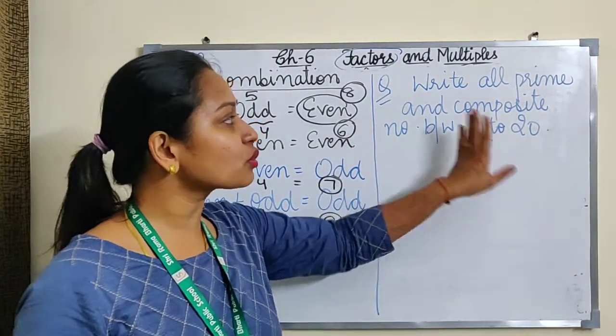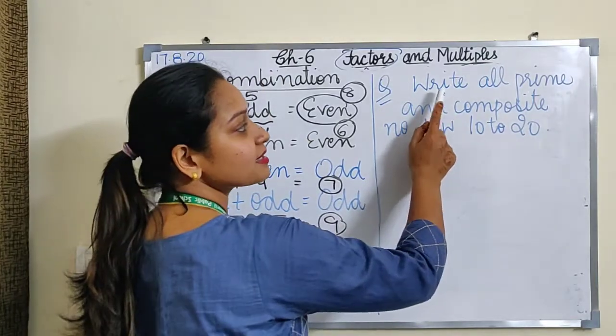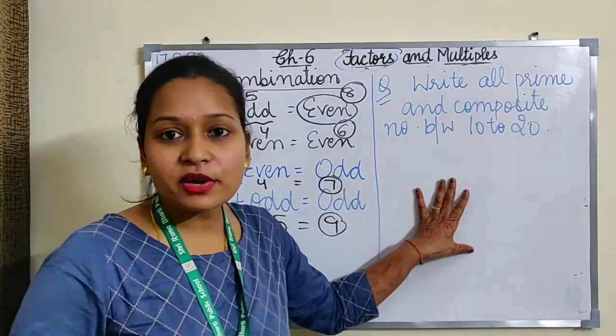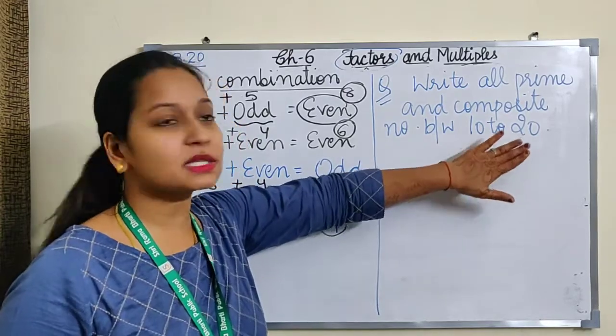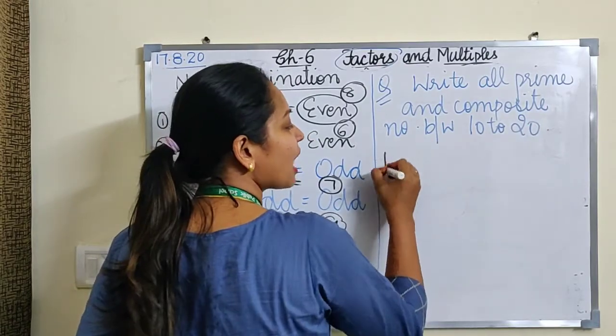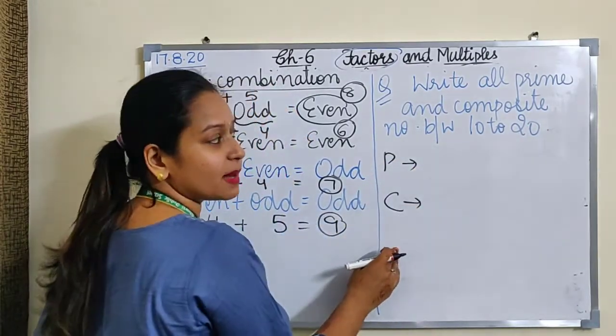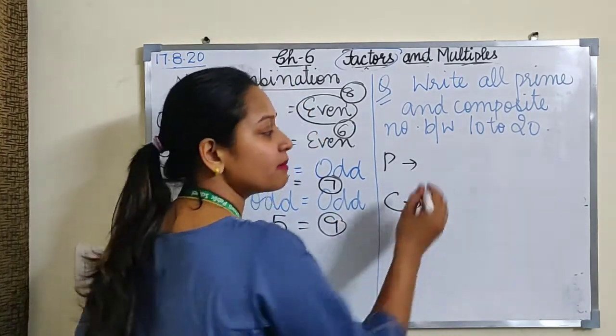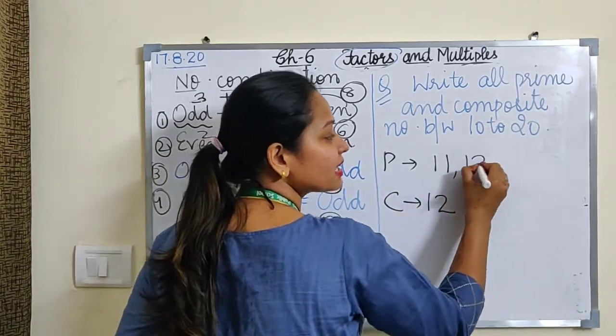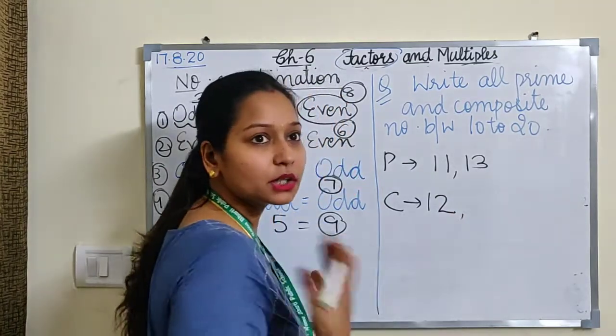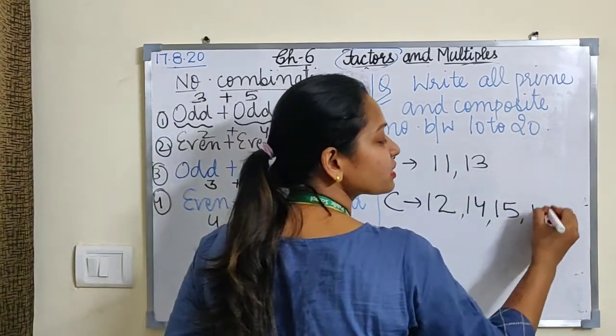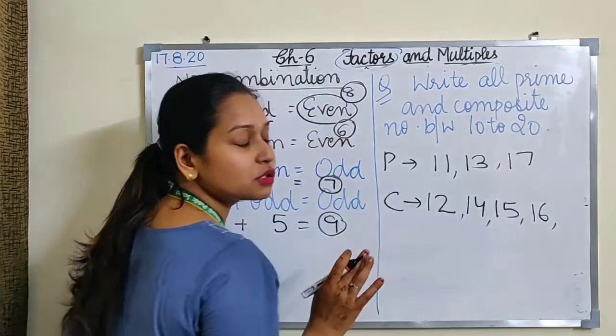Let me tell you one more question in which we have to find prime and composite numbers. Write all prime and composite numbers between 10 to 20. You have to find prime and composite numbers between this. I will make a list of prime numbers separately and composite separately. You have to start from 11. 11 is not in any table, so it's a prime number. 12 is coming in many tables, so composite. 13 is not coming in any tables, so prime. 14 is coming in 2 and 7 tables, so composite. 15 is also coming in 3 and 5 tables, so composite. 16 also is coming. 17 is not coming in any table, so it's a prime number.